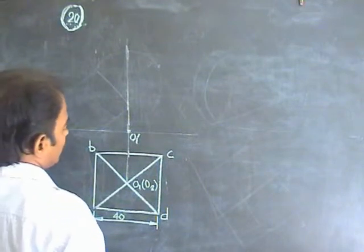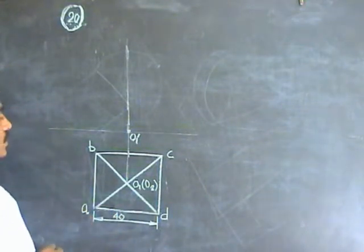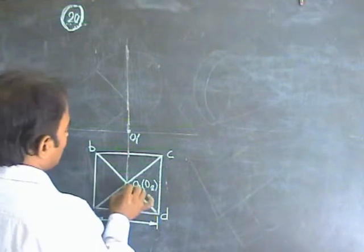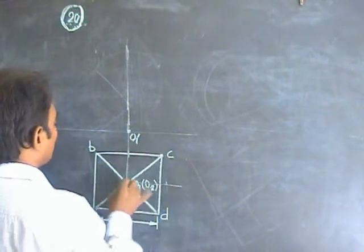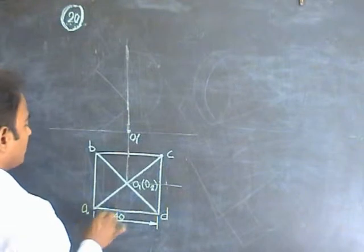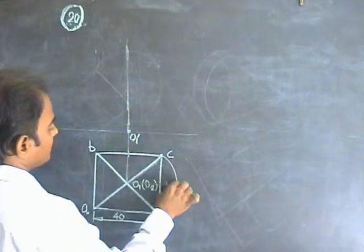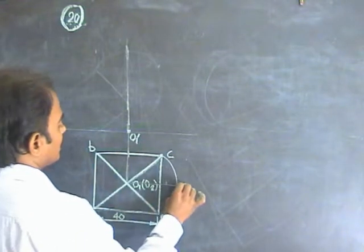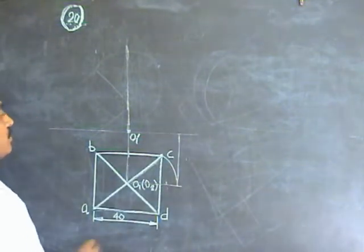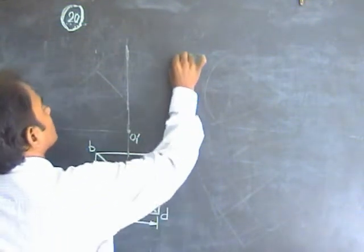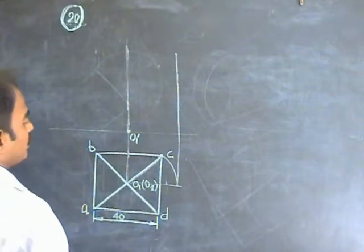Take this 40 m base. At the same time, try to get the slant edge distance. For that, turn this horizontal and try to capture this position. You will be getting a vertical line like this.